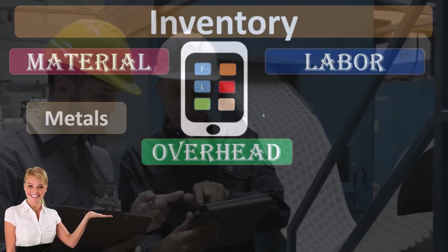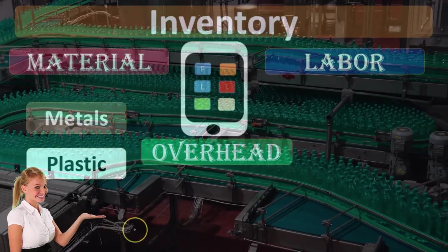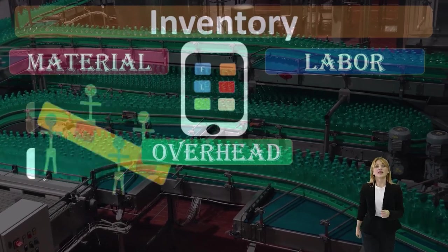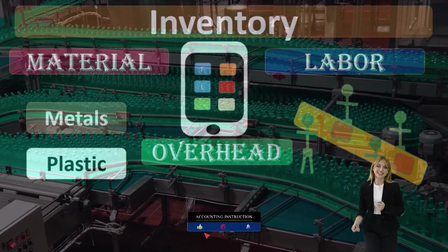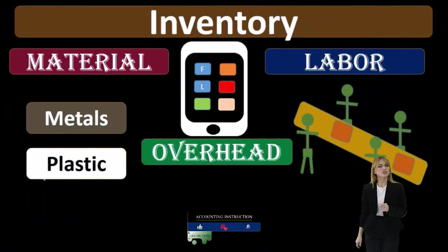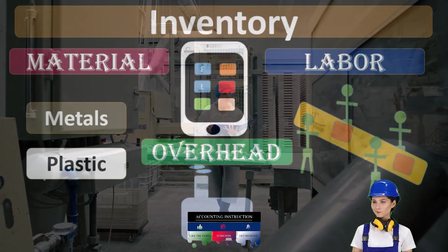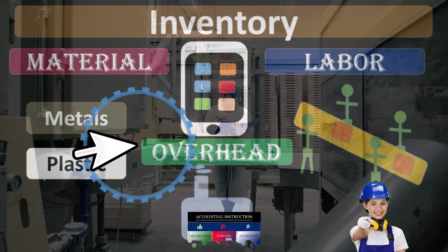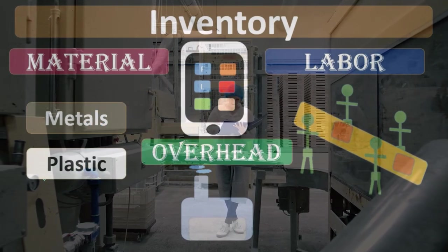Materials here would include things like plastics and metals that would be physically part of the inventory, as opposed to labor, which would be part of the value and cost but wouldn't be physically part of the end product. And then we have overhead, another conversion cost, also included in the price of the inventory but not actually physically part of the inventory.